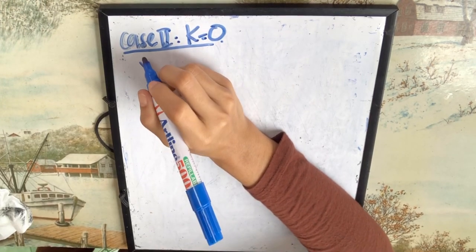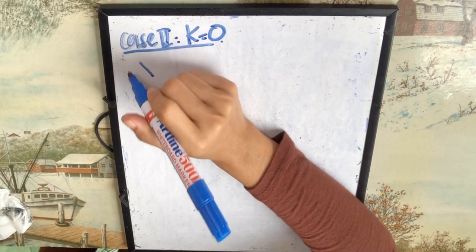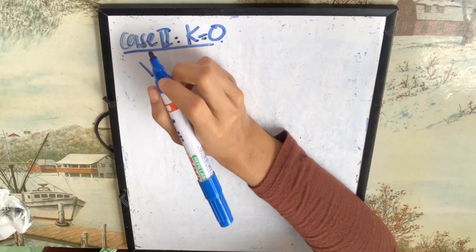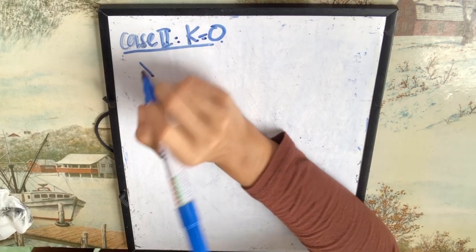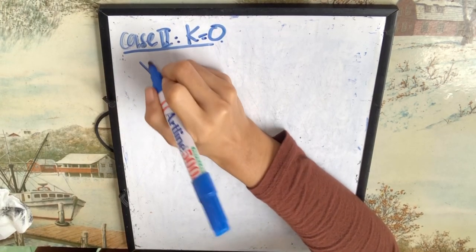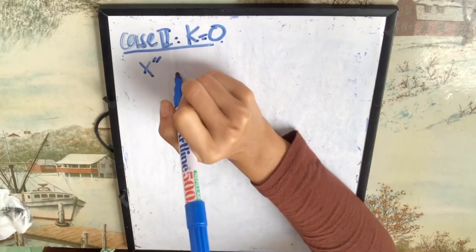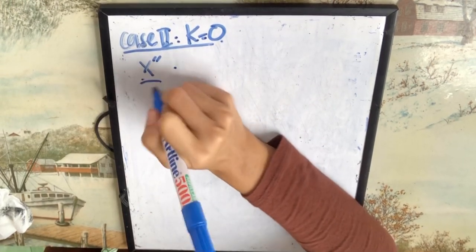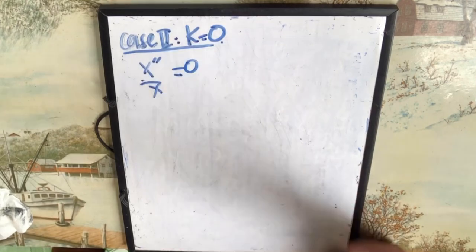So just now you have the x equation, what we call it, x double prime, right? x double prime, and then equal to x double prime over x equal to 0. Okay, equal to 0.